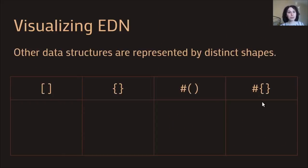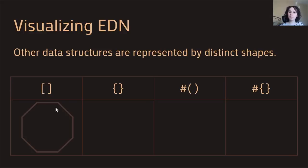One of the great things about Clojure is that it supplements the normal Lisp syntax with new types of forms representing different built-in data structures. For instance, vectors are represented by square brackets normally, and in Vlojure those get represented as octagons. Whereas parentheses get translated into smooth circles, these pointy square brackets get translated into a pointy octagon.